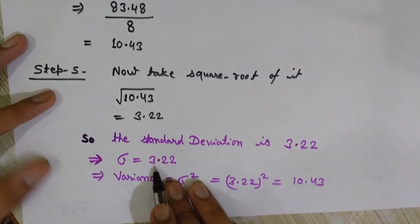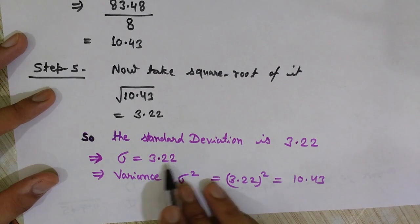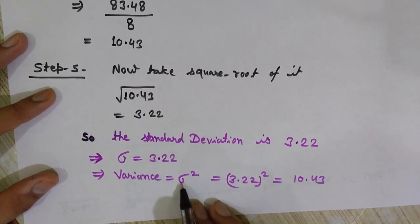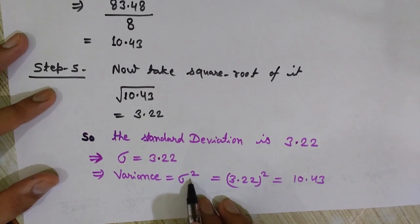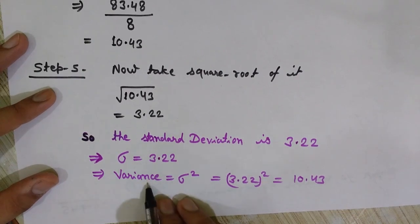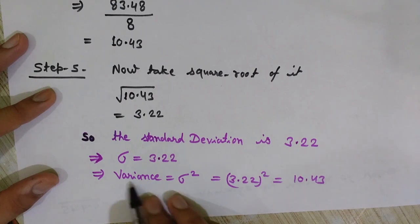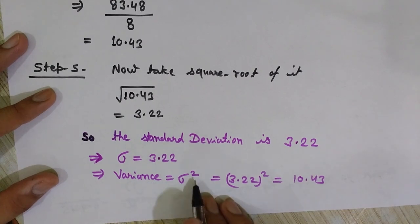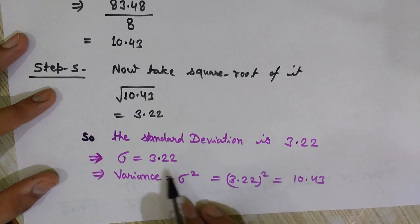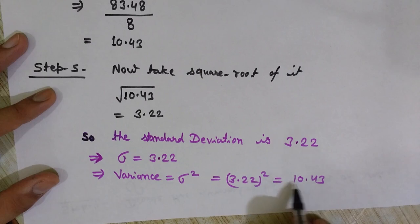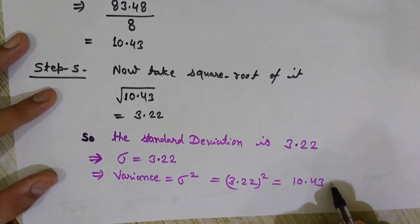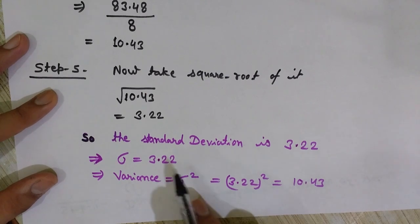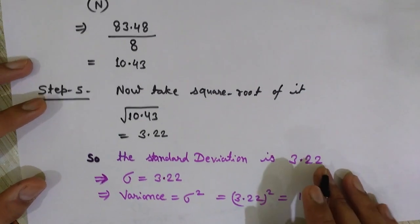The relationship between sigma and variance is that variance is simply the square of the standard deviation. To calculate variance, we square the standard deviation: 3.22 squared equals 10.43. So sigma squared, the variance, is 10.43, and the standard deviation sigma is 3.22.